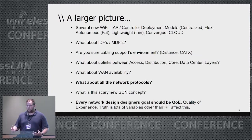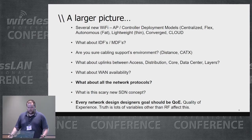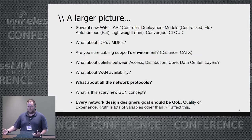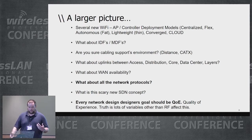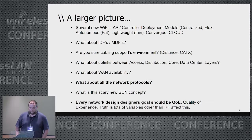What about the uplinks between the switches — between access, distribution, and core? What about the data center layers? WAN availability — if you go and put in new FlexConnect APs, is that going to oversubscribe the WAN? What if you're not doing flex? What does that do to your WAN? These are all different thought processes that come up other than just RF design. And what about all these other network protocols that are in play now, and this scary new concept of SDN?